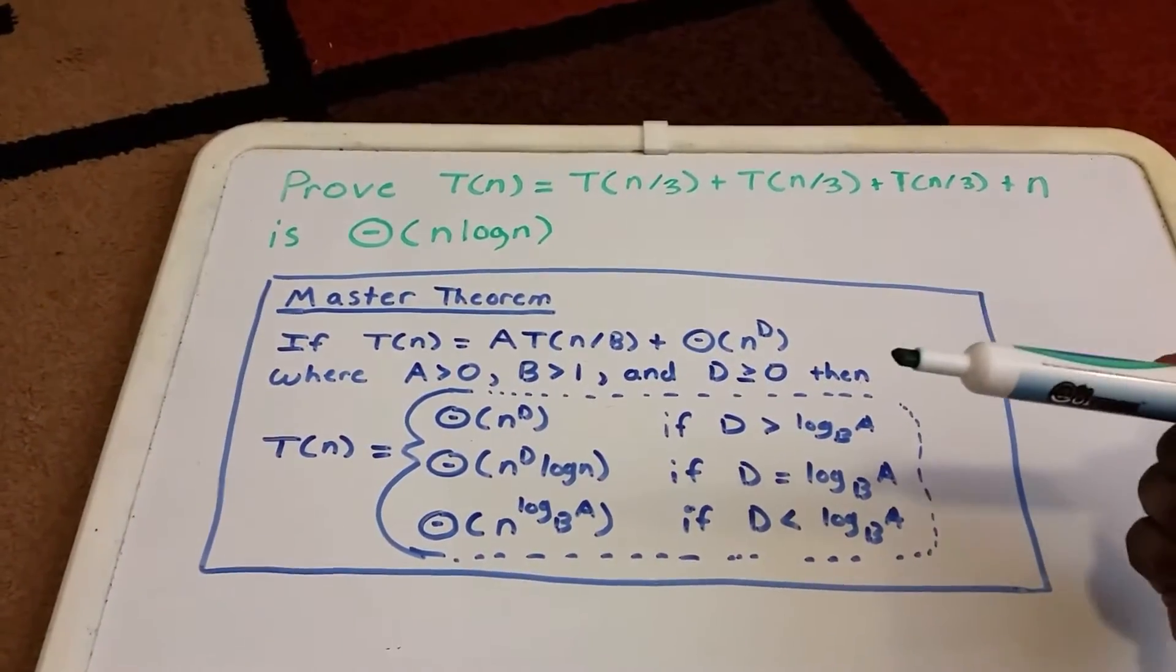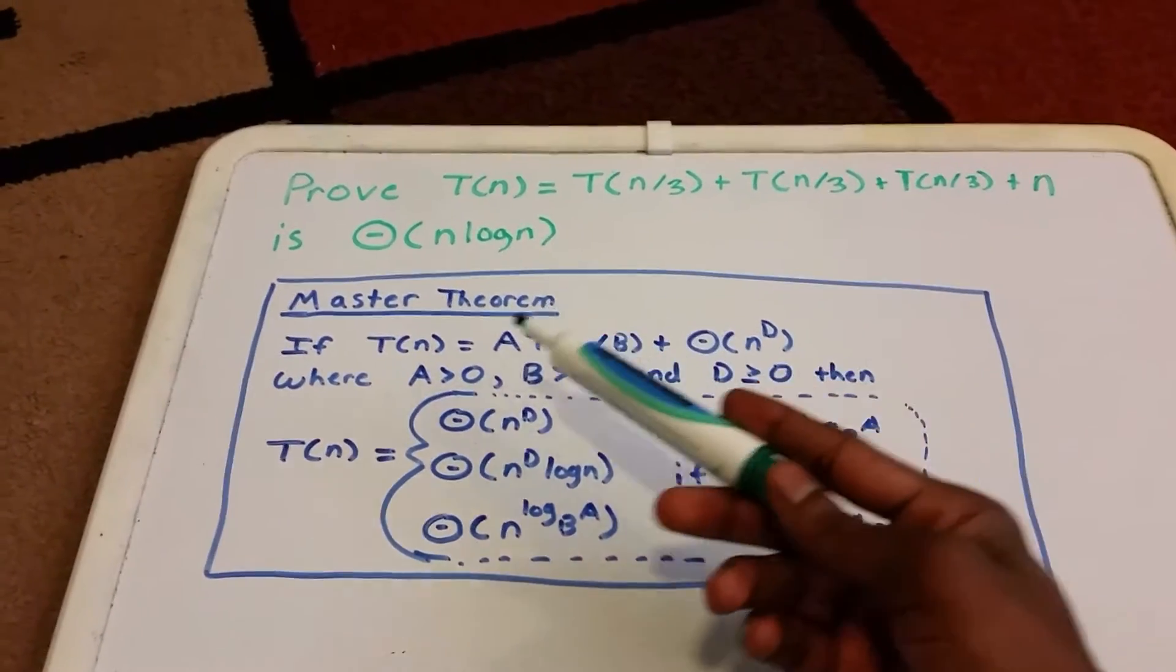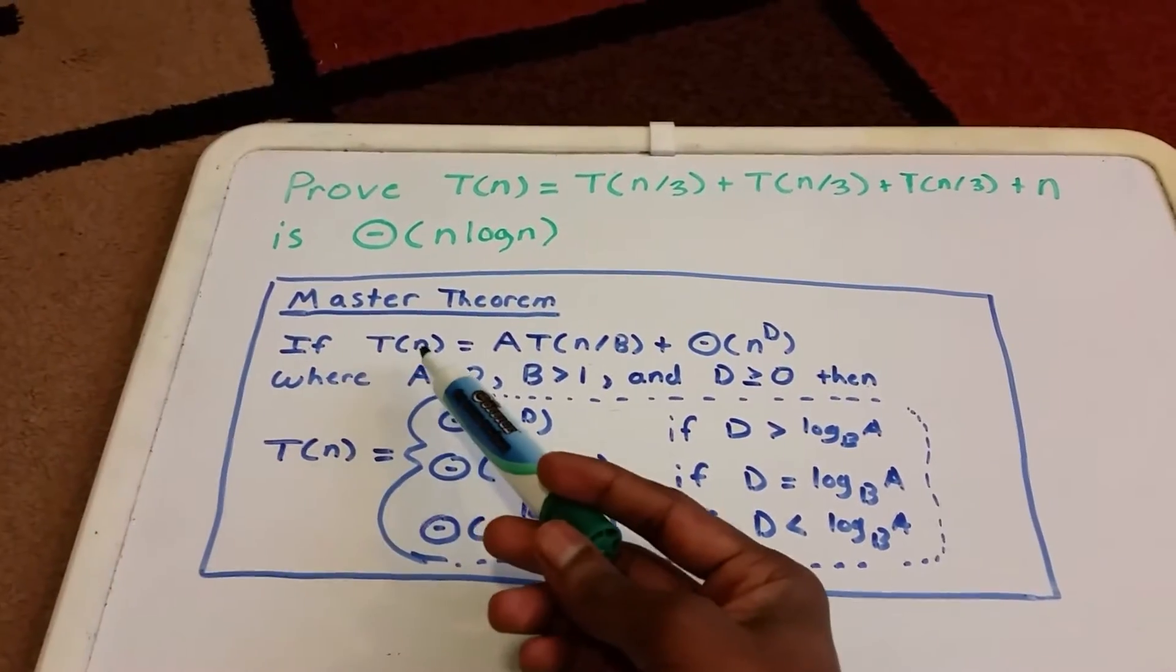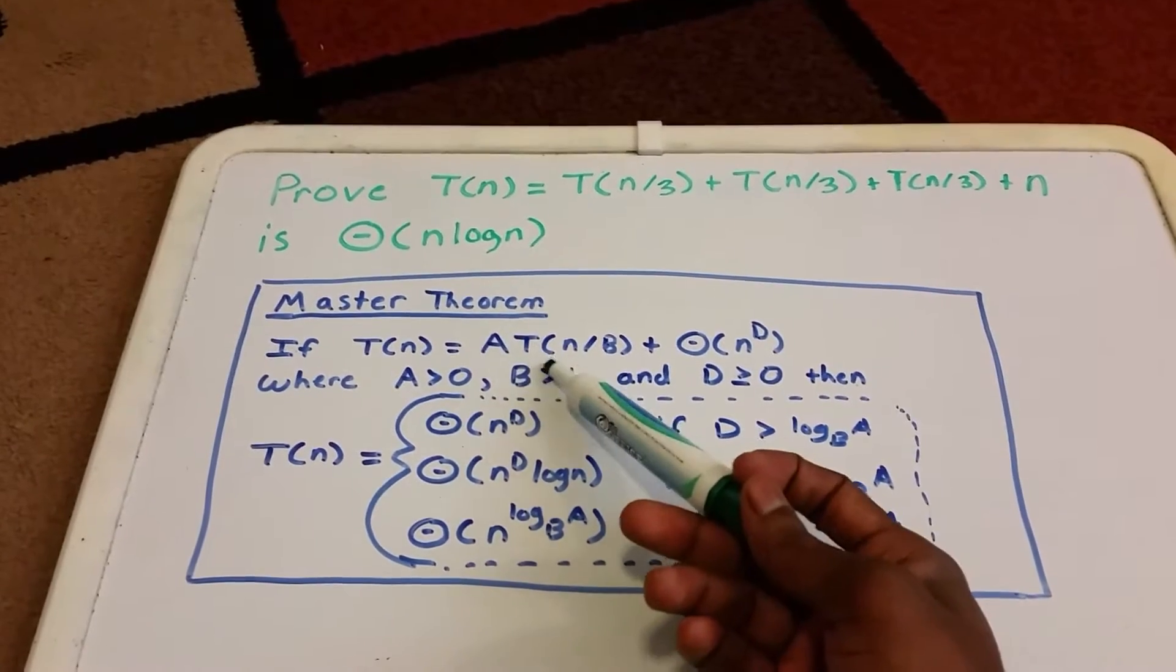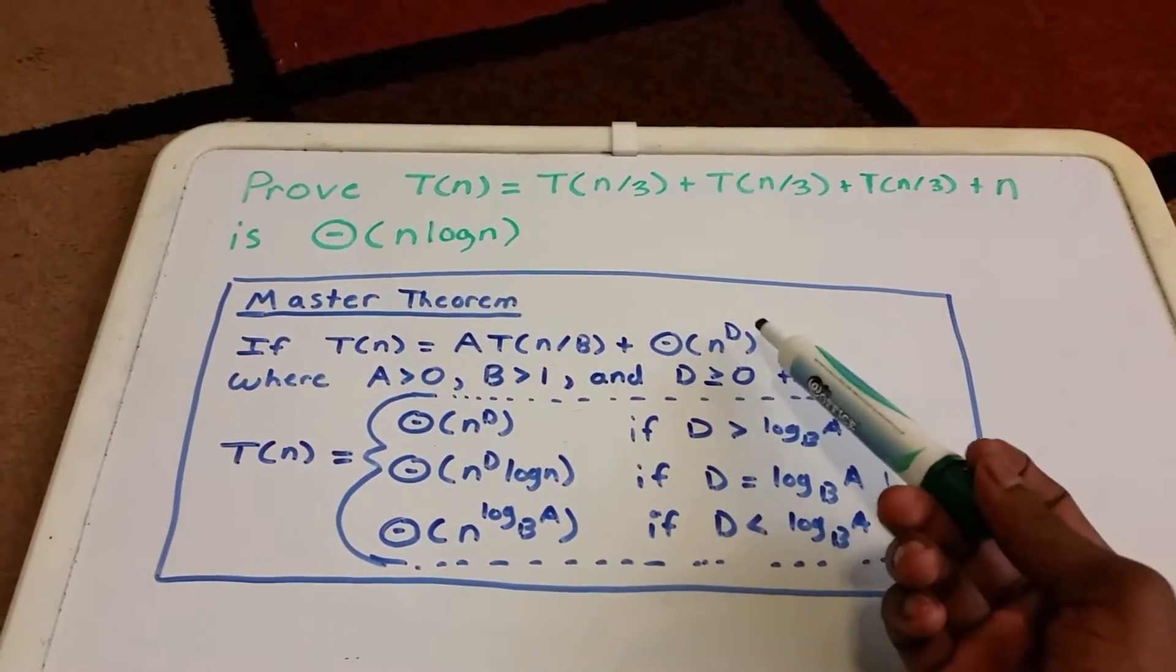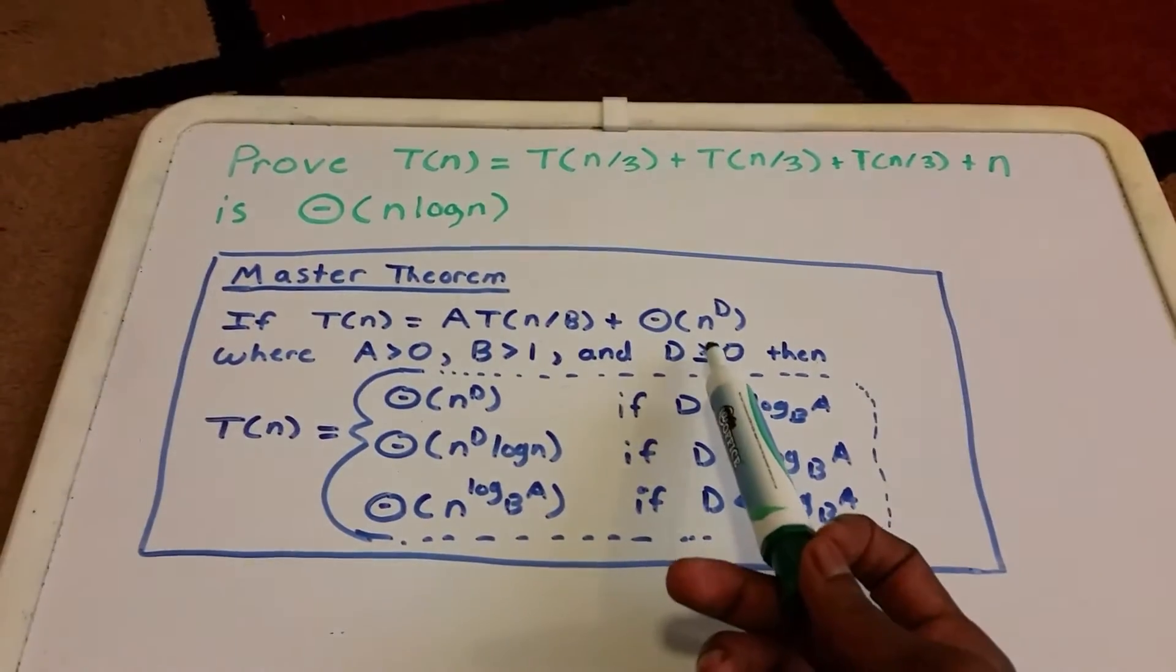To solve this, we'll use the Master Theorem. The Master Theorem states: if T(n) = a·T(n/b) + Θ(n^d) where a > 0, b > 1, and d ≥ 0, then...